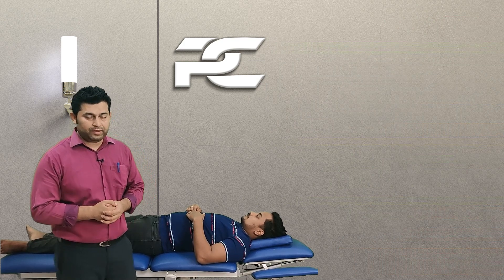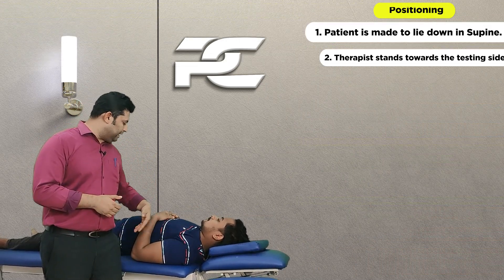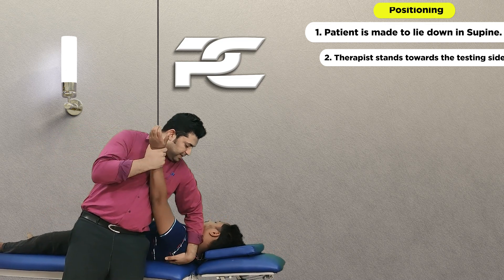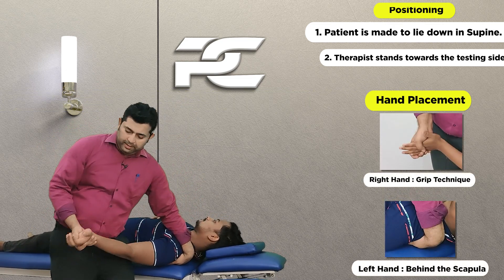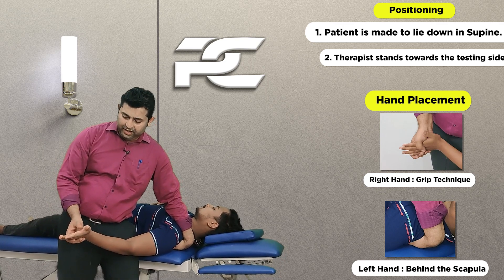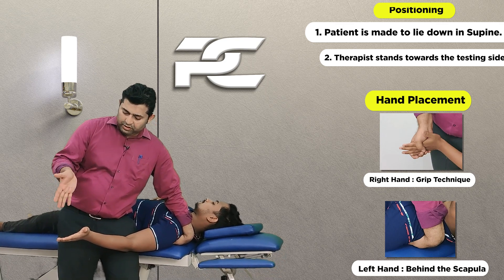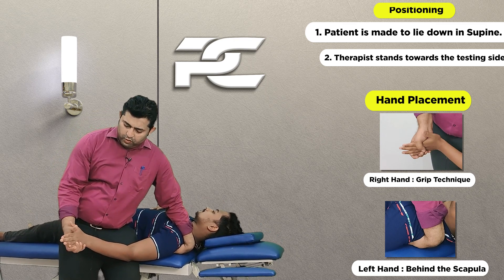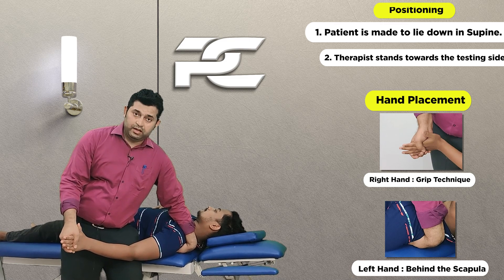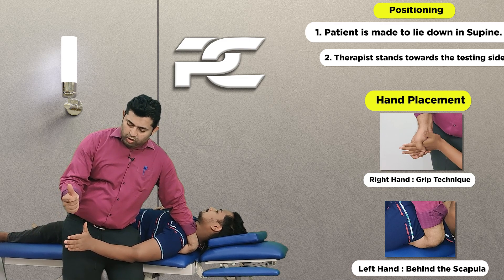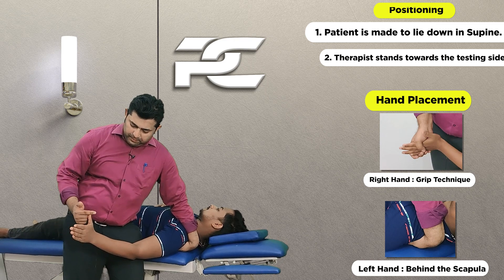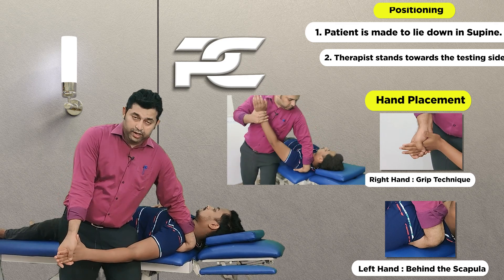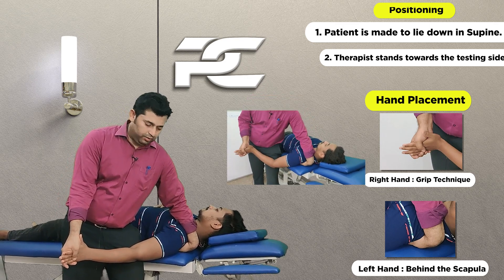To test the ulnar nerve on the left side, the therapist places the left hand behind the patient's scapula. The therapist's right hand contacts the patient's left hand with fingers wrapped around the patient's fingers and the thumb going posteriorly to stabilize the MCP joint. The thenar eminence of the therapist separates the patient's thumb from the rest of the fingers. This is the hold used to test the ulnar nerve.